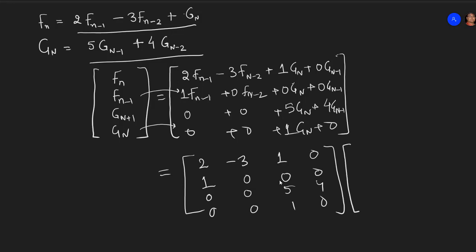And the second matrix that we have to write will be F of n minus 1, F of n minus 2, G of n, and G of n minus 1.